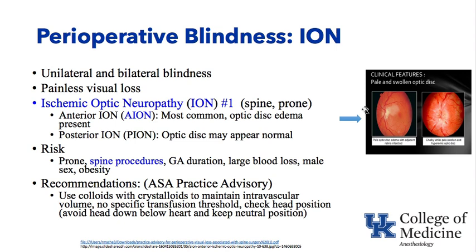Perioperative blindness: ischemic optic neuropathy is at the top of the causes. It can be unilateral or bilateral — the patient wakes up with painless visual loss, often after prolonged prone spine surgery lasting hours. It can be the anterior variant, where optic disc edema is visible on fundus exam, or the posterior ischemic optic neuropathy variant, where the optic disc appears normal but the nerve is damaged farther back from the eye, so you don't see changes on fundal exam.